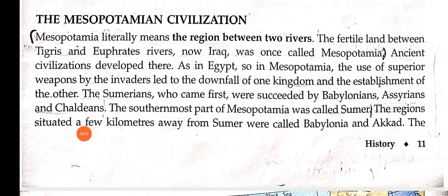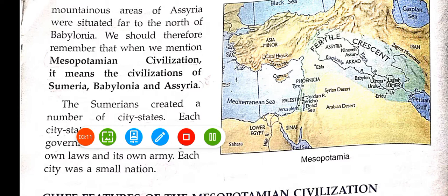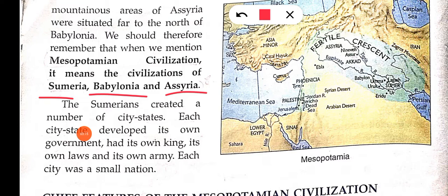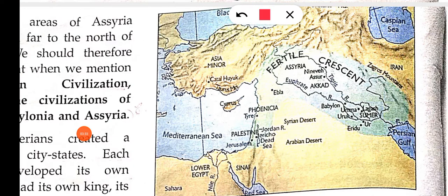Egyptian civilization ki tarah, yahan bhi ek kingdom ko hara ke dusri, dusri ko hara ke teesri — bahut saare kings hue. Pehle Sumerians, phir Babylonians, Assyrians, phir Chaldeans. Jo mountain area tha wo Assyria ka tha — situated far to the north of Babylonian region. Mesopotamian civilization matlab Sumerians, Babylonians, Assyrians, aur Chaldeans ki civilization — aur ye aaj ke modern day Iraq mein hai. Map mein dekho: Sumerians, Babylonian, Akkad region, aur Assyria region.